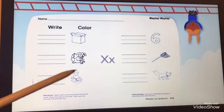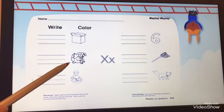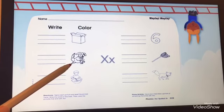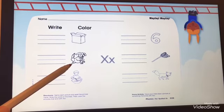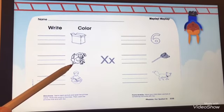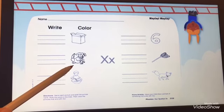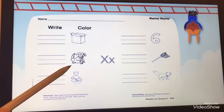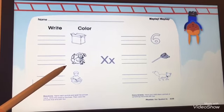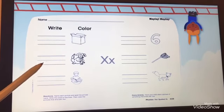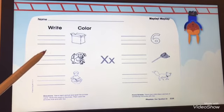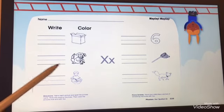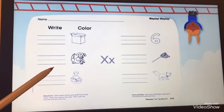Now second picture, who can tell me what is this? Do you know what is this? What is this animal? Yes, perfect! It's a dog. Now also hold your pencil and start to write with me: D, O, G. Dog.